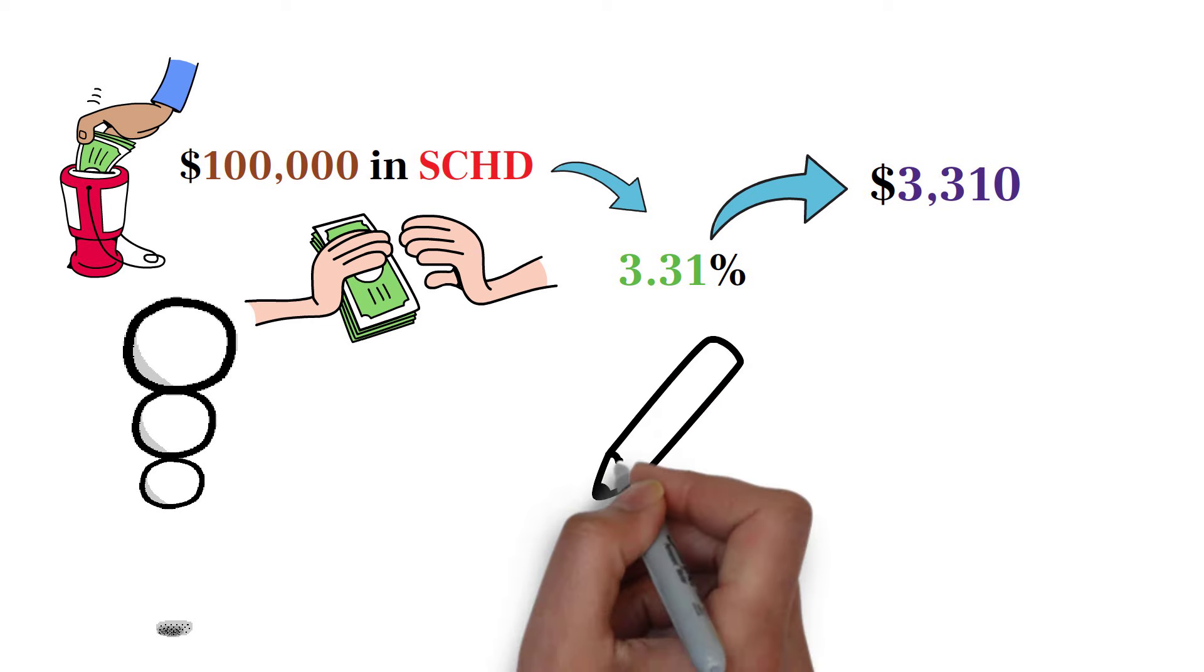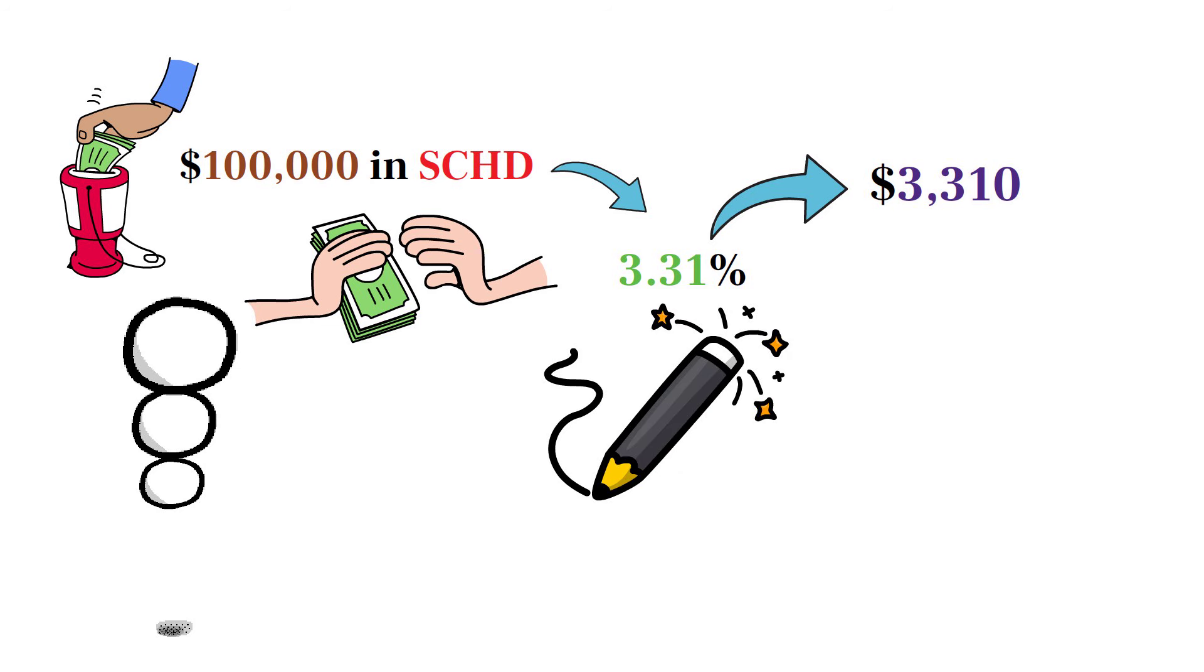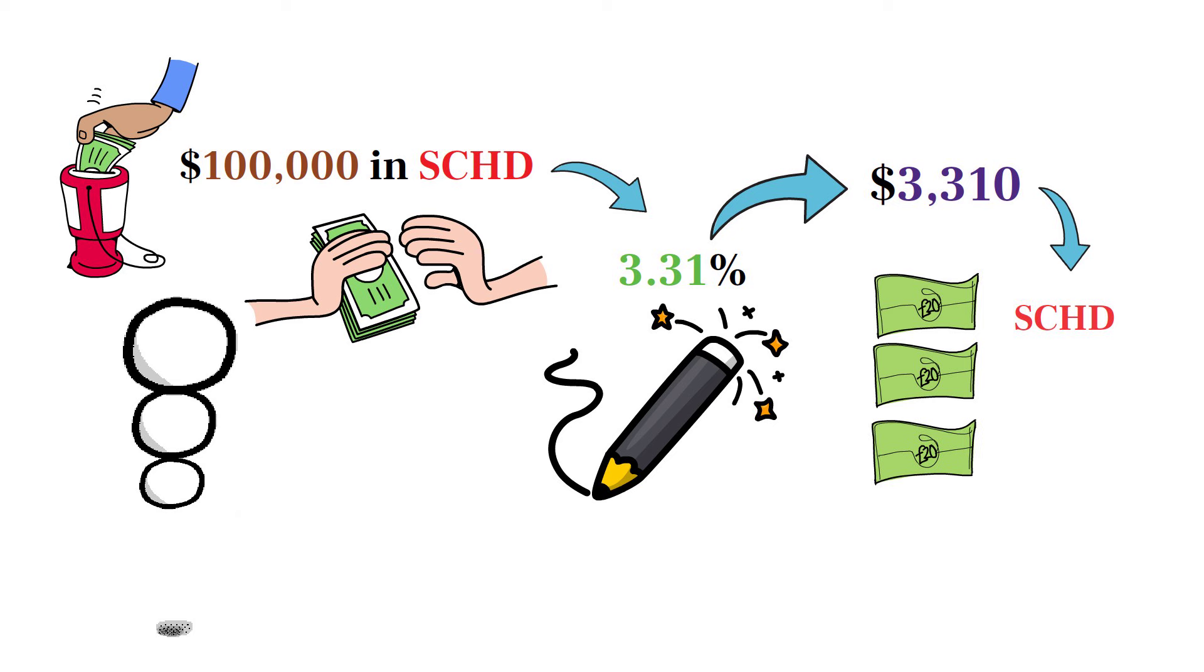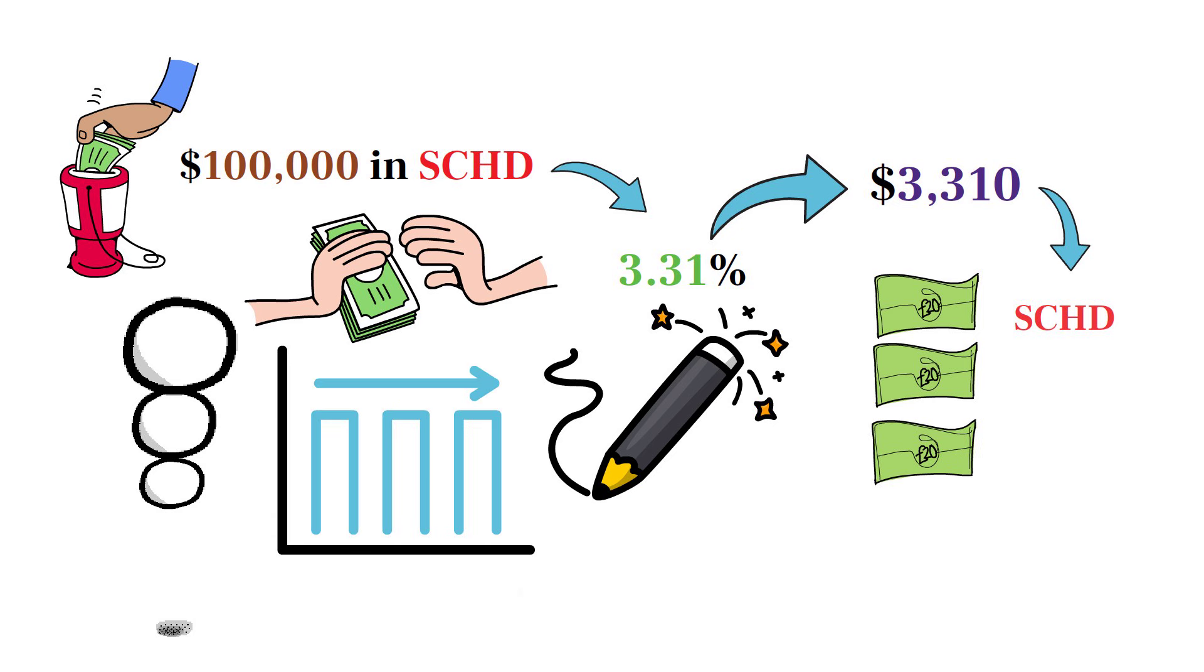Here's where the magic happens. If you reinvest these dividends to buy more shares of SCHD, those additional shares will start generating their own dividends. Let's assume the yield and growth remain consistent over time. Thanks to the compounding effect, your dividend income will grow each year without any additional investment from your pocket.